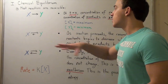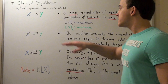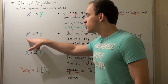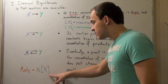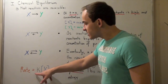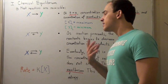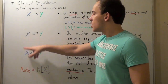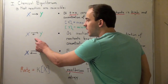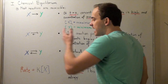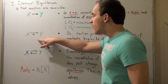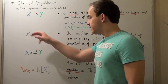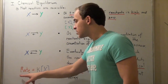Somewhere in between our initial and final point, our forward rate begins to decrease. Because the concentration of X begins to slowly diminish, and since the rate constant remains the same, the forward rate also begins to diminish going from X to Y. Going from Y to X, the concentration of our product begins to increase. As more Y is produced, the rate law for going from product to reactants — the rate of the reverse reaction — begins to increase because the concentration of Y is increasing.